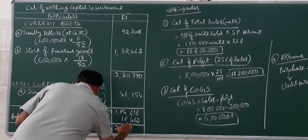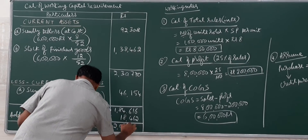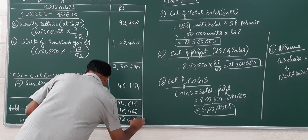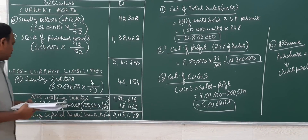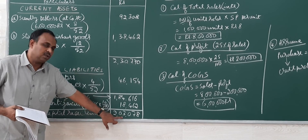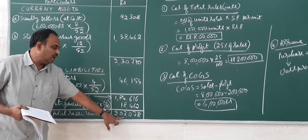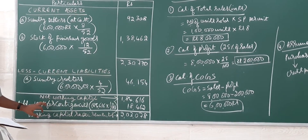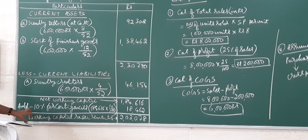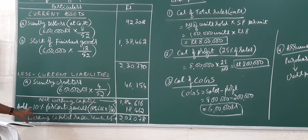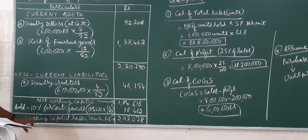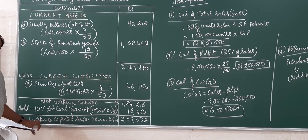Net working capital of 1,84,616 multiplied by 10% gives contingency of rupees 18,462. Adding this gives a total working capital requirement of rupees 2,03,078. So the working capital requirement is two lakh three thousand seventy-eight rupees. Note: not all problems include a contingency — if there is none, the net working capital itself is the working capital requirement.